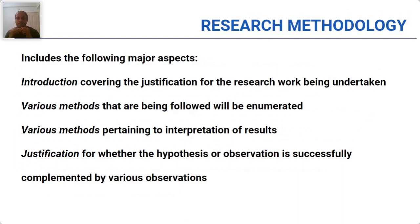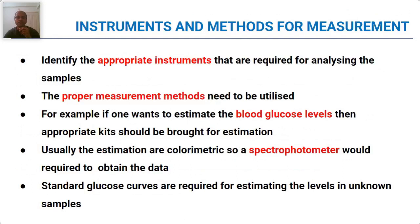Now we come to research methodology. Research methodology is not just methods. Research methodology includes the following parts: first, an introduction which justifies why you are doing this research; then the various methods utilized for collecting the data; then various methods pertaining to interpretation of results and a justification of whether the hypothesis is met or not; and the instruments and methods for measurement. For example, measurement of blood glucose levels with appropriate kits — you have to mention the various instruments and how you measure it, give the details of the method and instrument, and draw standard glucose curves for explaining it.